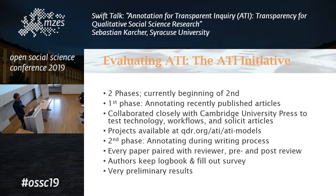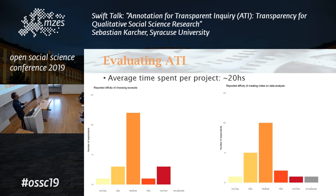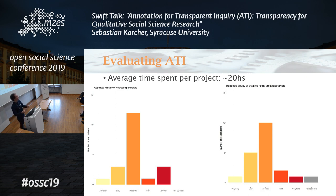We haven't gone very far in analyzing that, so I'll show you a snippet. One interesting finding: people reported spending about 20 hours per project — from the first workshop, so retroactively. I don't know if this is a lot or a little: it's almost three full work days to be transparent, but on the other hand it's only half a week to make your article transparent. One of the most interesting things we asked was what people found hardest, and the answer was: choosing the excerpts to include in annotations. It wasn't tracking down the excerpt or finding the sources — they had so much evidence that choosing what they were basing their statements on was the hardest thing, which is kind of encouraging for qualitative research.